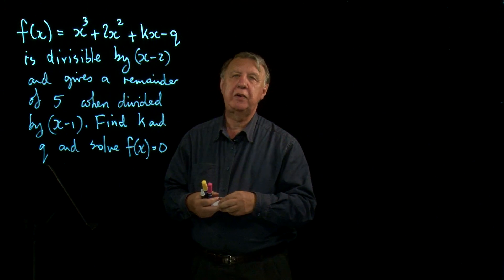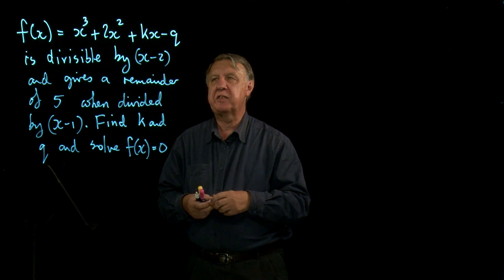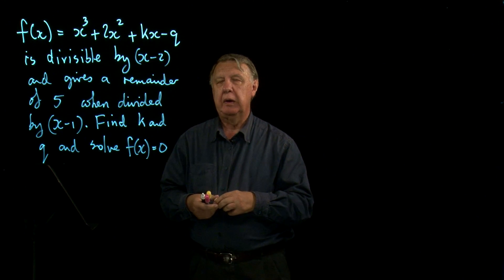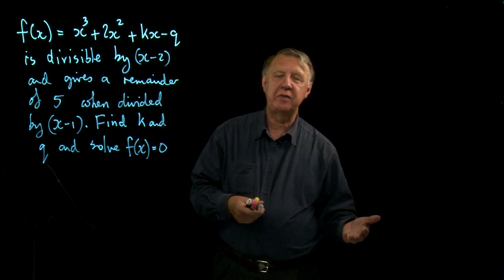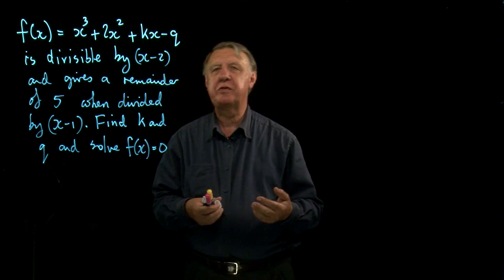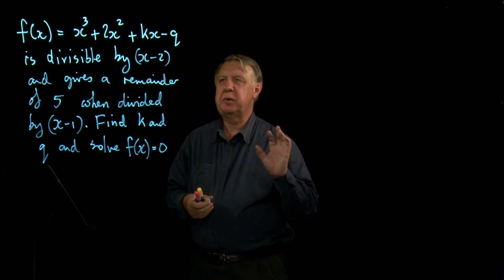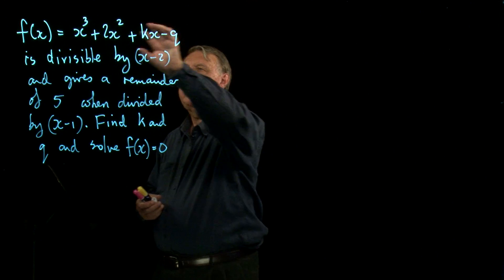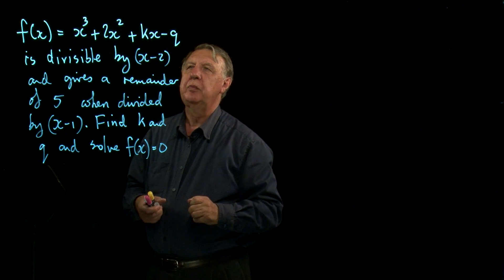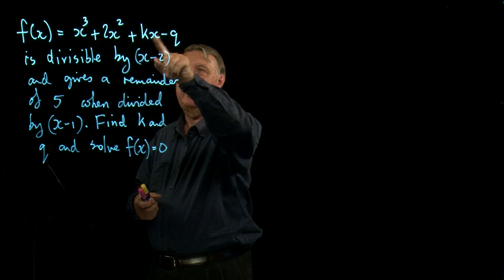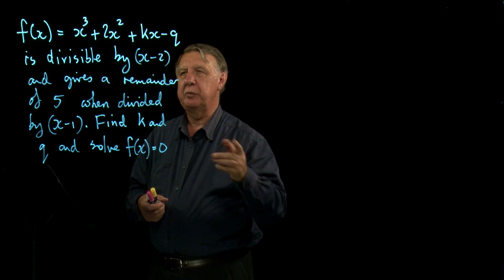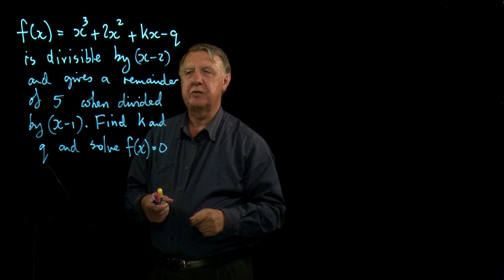Here we have a typical exam example of using the factor and remainder theorem. A lot of people make this a very complicated question, but it can be solved in a beautifully simple way. So we've got our cubic polynomial and we have a couple of unknown constants in there, but we've got some information about it. We know it's divisible by x minus two.